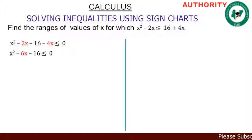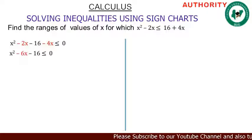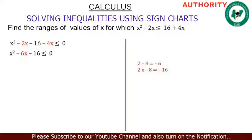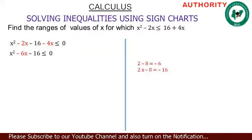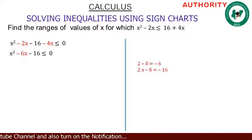Now from here, let's factorize. We ask ourselves: what are the two numbers that when you add them give you minus 6, and when you multiply them give you minus 16? The two numbers are 2 and minus 8 — two minus eight gives minus six, and two times minus eight gives minus 16.